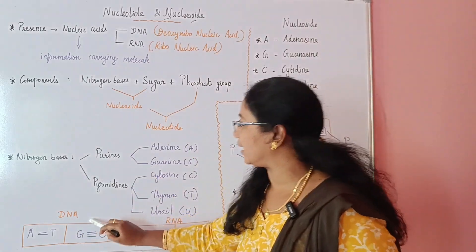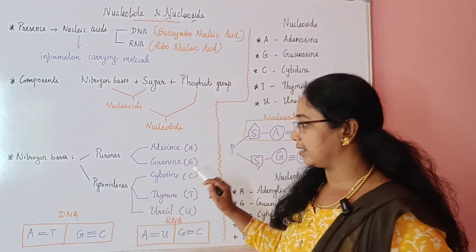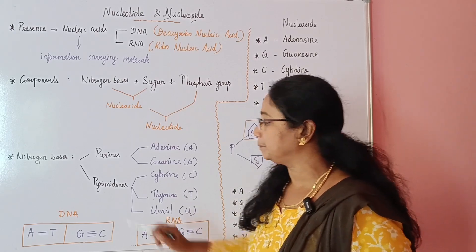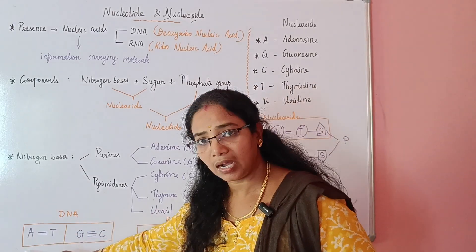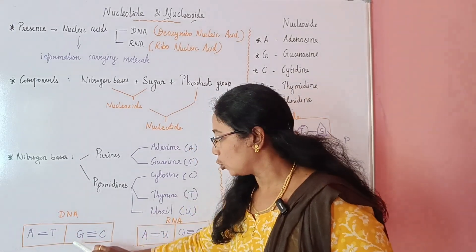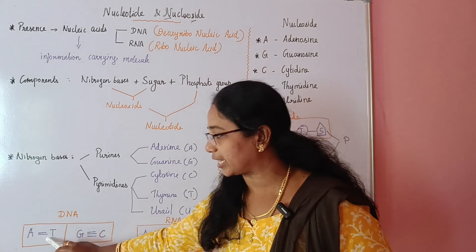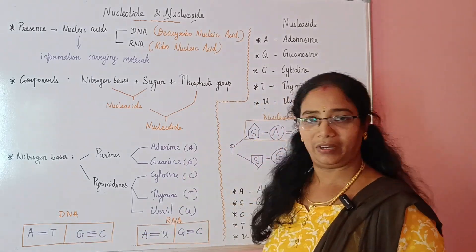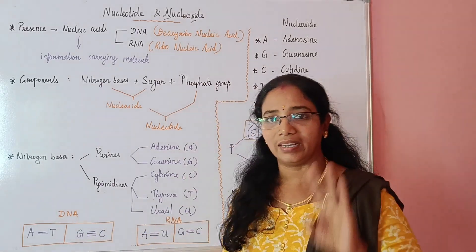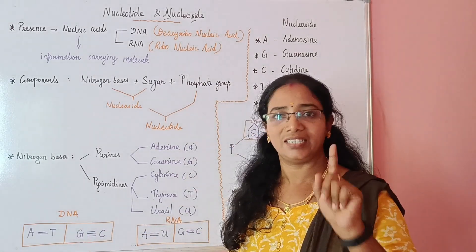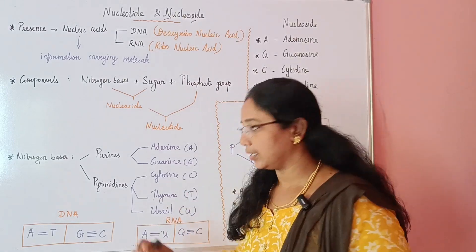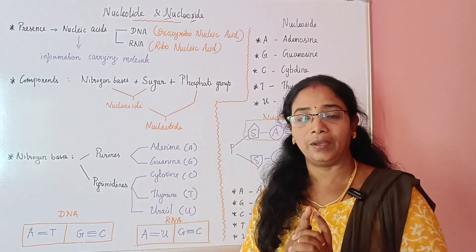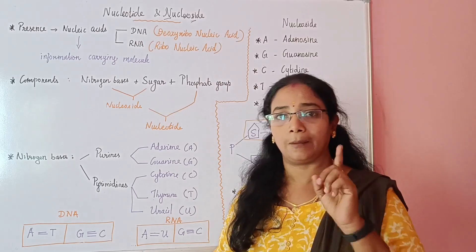Now, what are the nitrogen bases in DNA? The combinations are adenine, guanine, cytosine, and thymine — four nitrogen bases. The combination of nitrogen bases is very important.